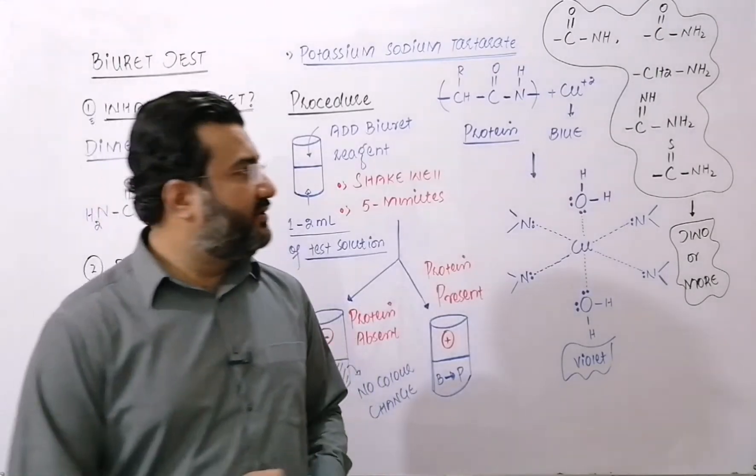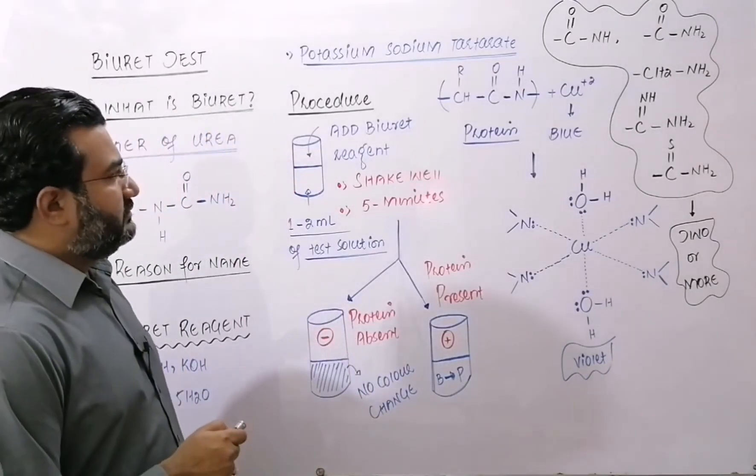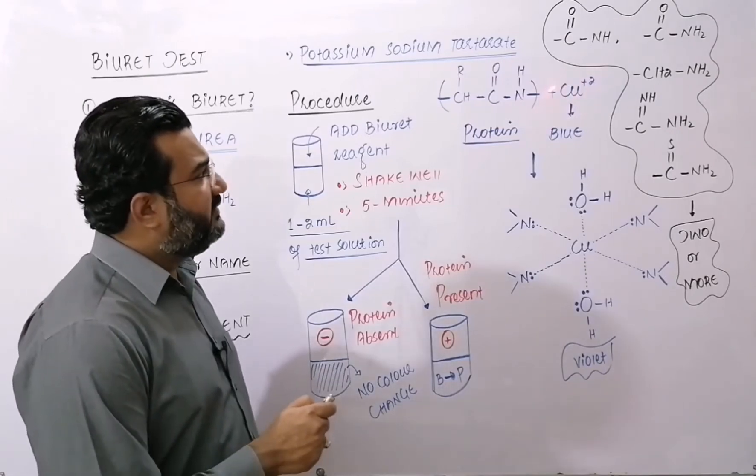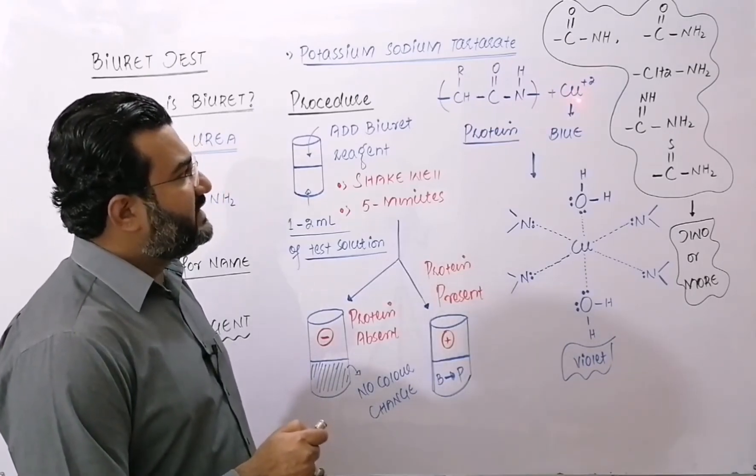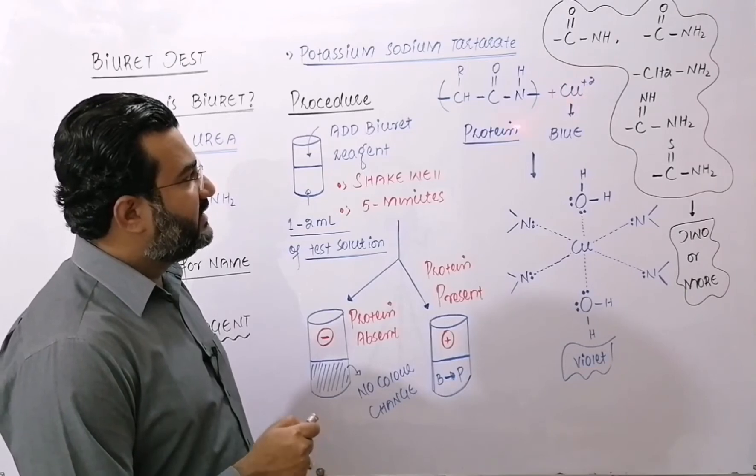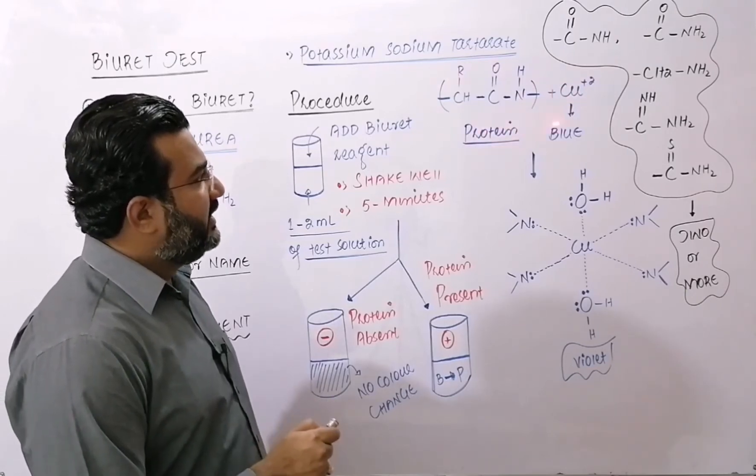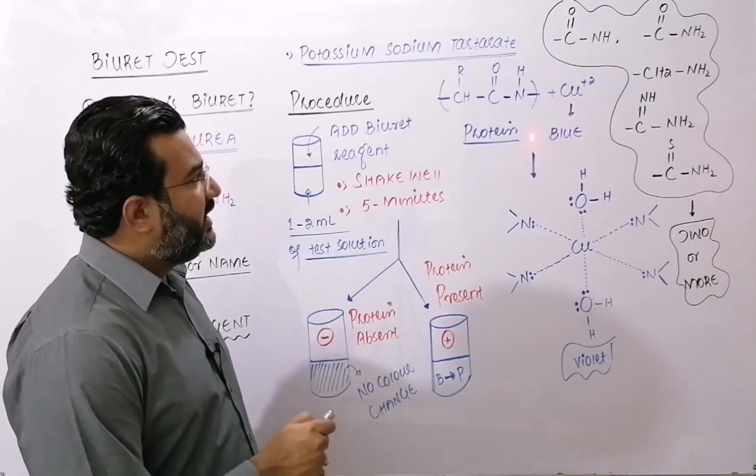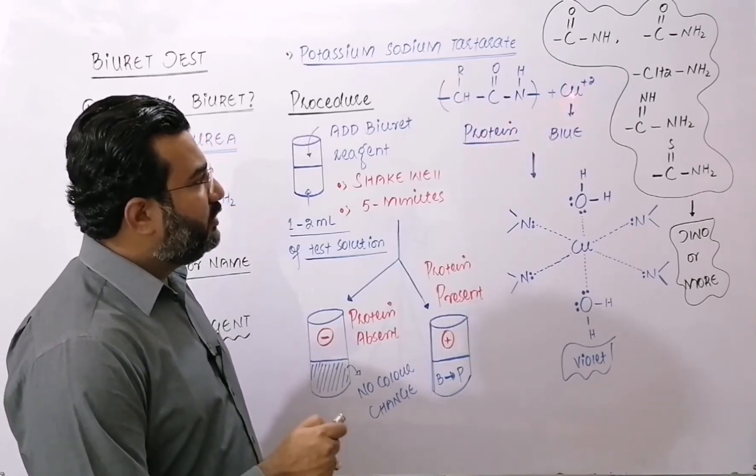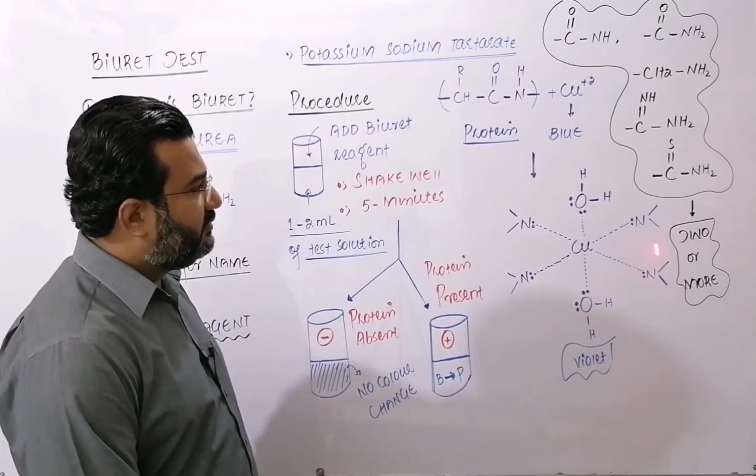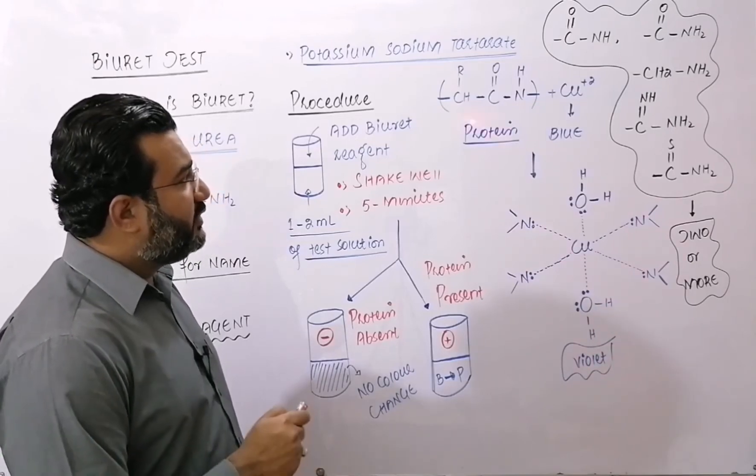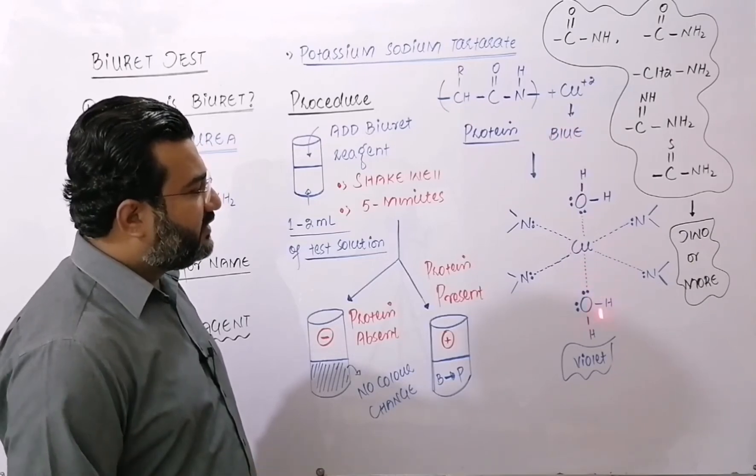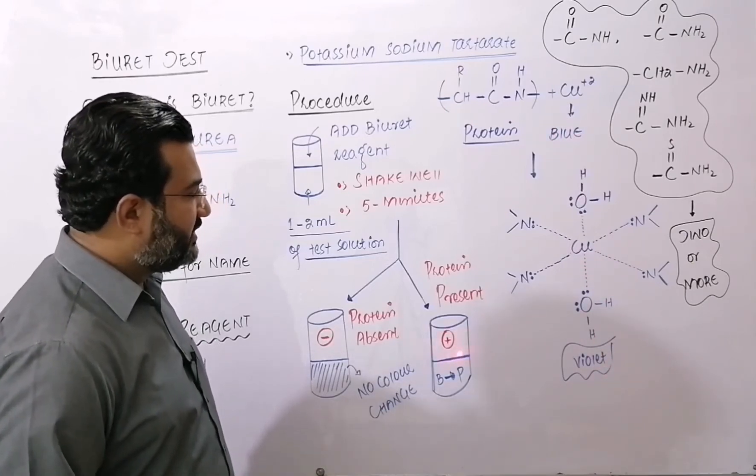Now, my dear students, what is the chemistry of this biuret test? When a protein is made to react with the biuret reagent, then basically Cu+2 ions of the biuret reagent react with the protein. The color of this Cu+2 ion is blue and after the protein reacts with the cupric ions, then this complex is formed which has the violet color. If the protein will be there, then this complex will be formed and color will be changed from blue to violet. So it will be positive biuret test.